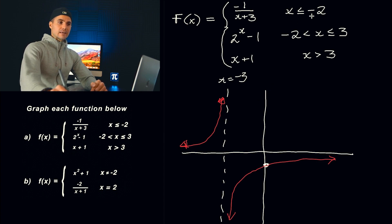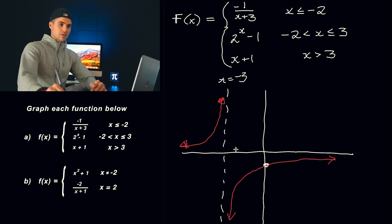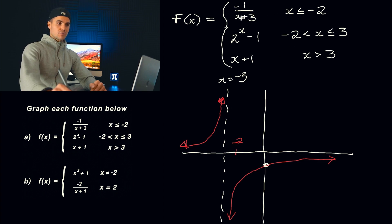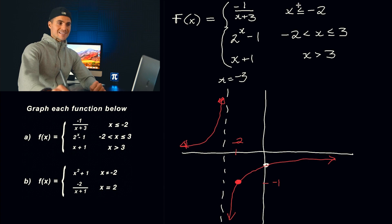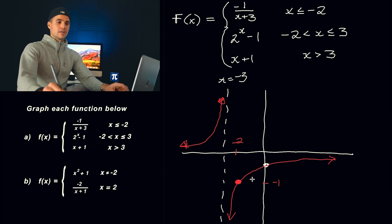However, we have to limit this domain to x less than or equal to negative two. So where's negative two going to be? If we plug in negative two into this reciprocal function, negative two plus three is one, negative one divided by one is negative one. So the y value of that point is going to be negative one. Notice that the function is going to end with a solid dot because it's less than or equal to negative two — if it was just less than negative two, that would be a hole. But it's including that x value of negative two, so we put a solid dot there.